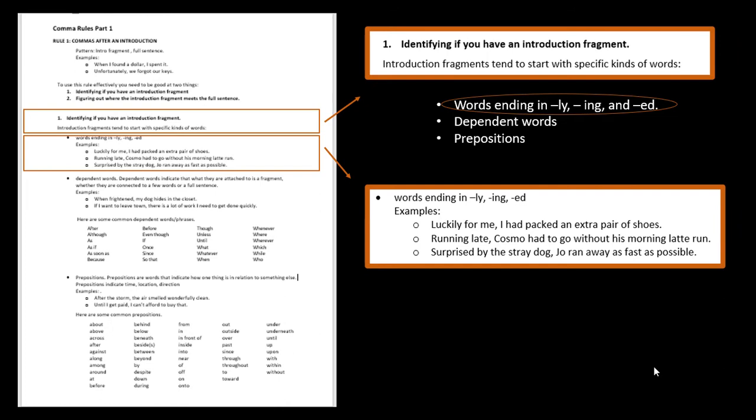So some examples. Luckily for me, I had packed an extra pair of shoes. So luckily ends in -ly so I knew that that was an introduction fragment or it started with an introduction fragment. Two, running late, Cosmo had to go without his morning latte run. So running -ing if I knew that I had an introduction fragment. The last example is surprised by the stray dog, Joe ran away as fast as possible. So it ended with -ed so you knew that that started an introduction fragment. Those are pretty easy to identify.